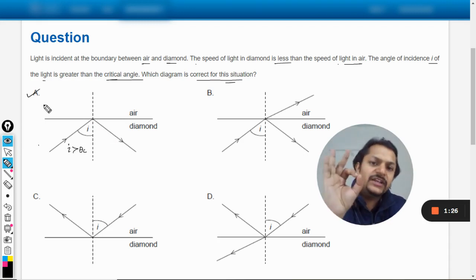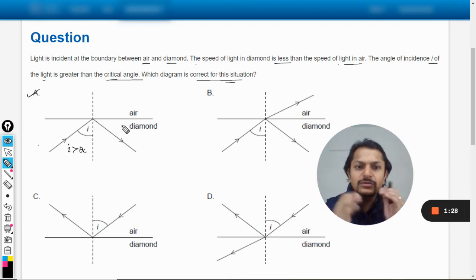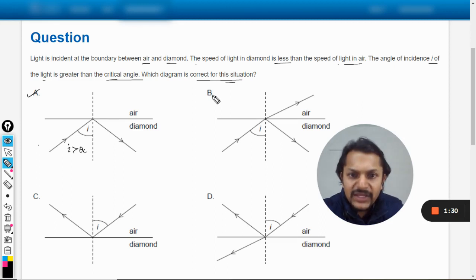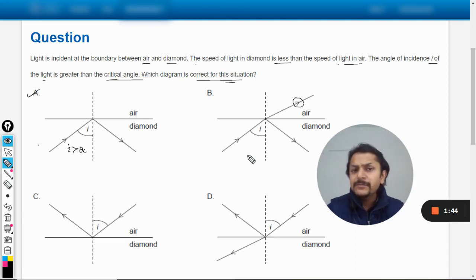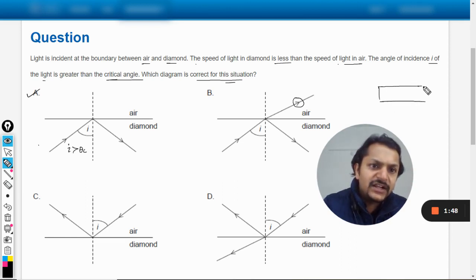Let us go for the other options also. I can B. So the difference in B is that they have shown this light that is coming out of the diamond also. So some part of it is getting reflected back, but some part is able to reflect out of the diamond. Is this possible?